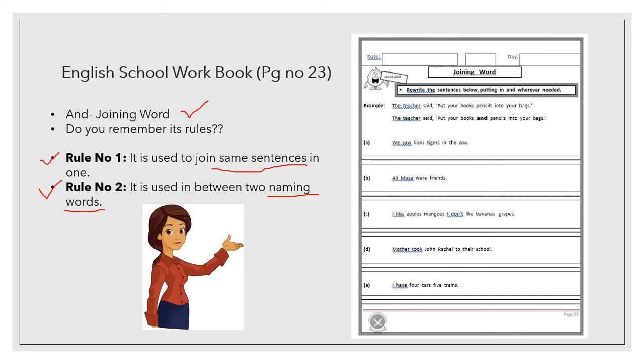This is the picture of page number 23. Let us start joining words. Rewrite the sentences below, putting in and wherever needed. Example. The teacher said, put your books pencils in your bag. Put your books pencils in your bag. As you can see, there are two nouns over here. One and two. But is it making a sensible sentence? No.